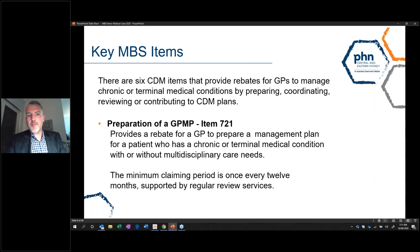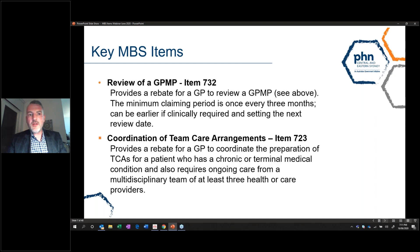The first is the preparation of a GP management plan, item 721. The minimum claiming period is once every 12 months and is supported by regular review services. This item number applies with or without multidisciplinary care needs. The second is the review of the GP management plan, item 732, which provides a rebate for the GP to review the original plan. The minimum claiming period is once every three months, though it can be earlier if clinically required, and the next review date must be noted.